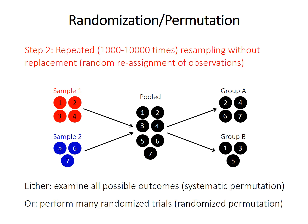So it's possible to examine all possible outcomes, which is called systematic permutation. It's possible if the sample size is small, but it's much more common to just perform many randomized trials. So what we're going to do is put the data into one pool, and then randomly resample that, which essentially just reshuffles and reassigns the observations among the new samples. We're sampling without replacement, so all of the original observations are sampled once. We don't leave any out. They all get taken and put once into our random groups.